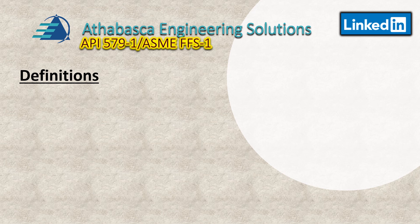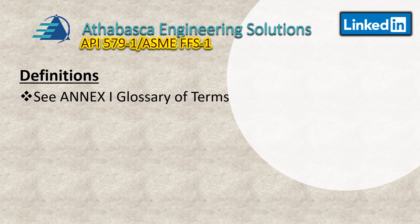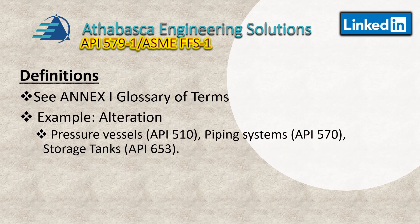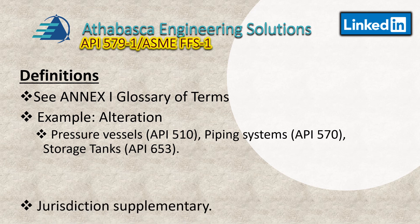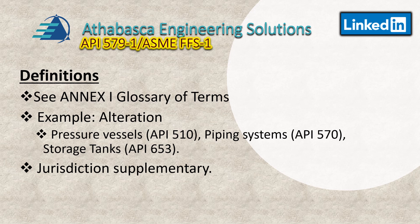Part 1 includes definitions and a glossary, which are important when writing reports. It refers to Annex I for a glossary of terms, including definitions such as what constitutes an alteration, supplemented by what API 510, API 570, and API 653 say. The jurisdictional supplementary glossary terms also apply, and the jurisdiction takes precedence with its own terms as well.